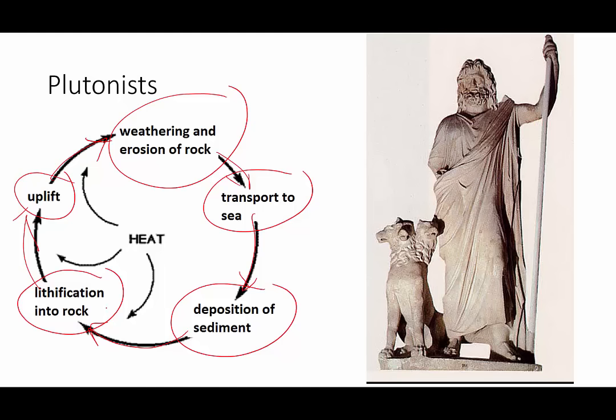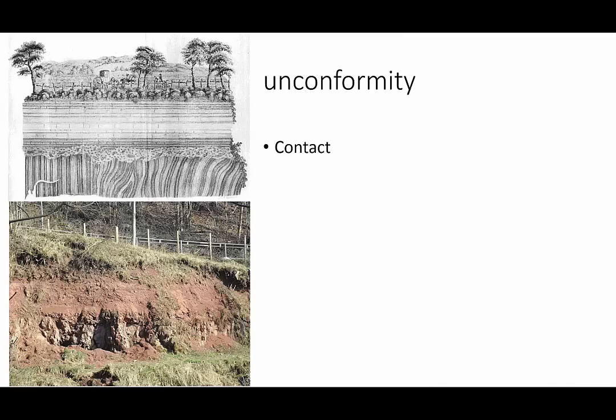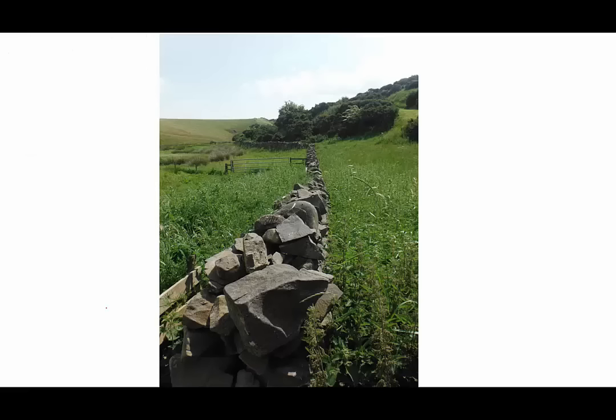What Hutton needed to support his theory was evidence that sedimentary rocks were formed in a series of cycles. He looked for contacts between rock layers called unconformities. First, he had to find out where two different kinds of rocks were in contact with each other. All he had to do was follow the stone walls.